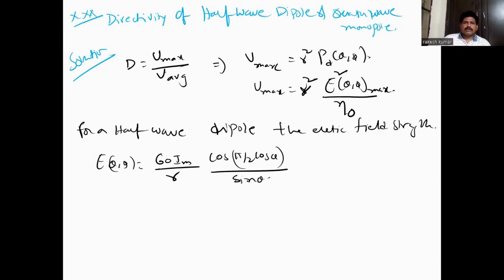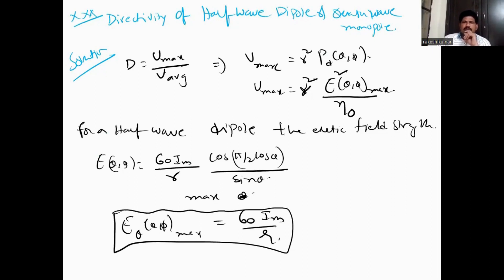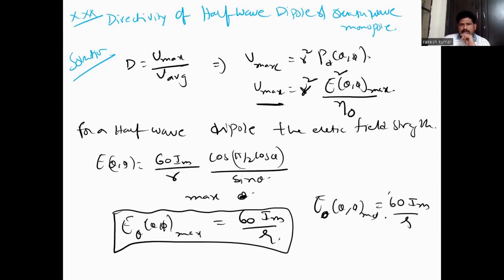What is the maximum value of this expression? The maximum value of E(θ, φ) occurs when we substitute the optimal angle. So u(θ, φ)_max is equal to 60 times Im divided by r. This is the value of u(θ, φ)_max.